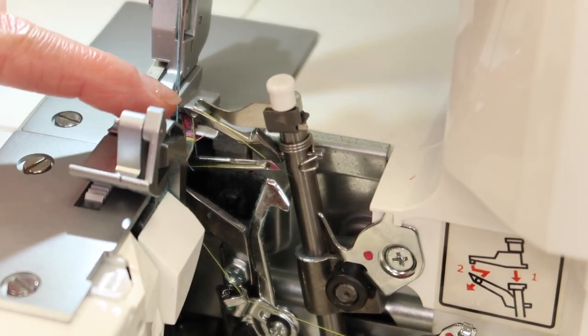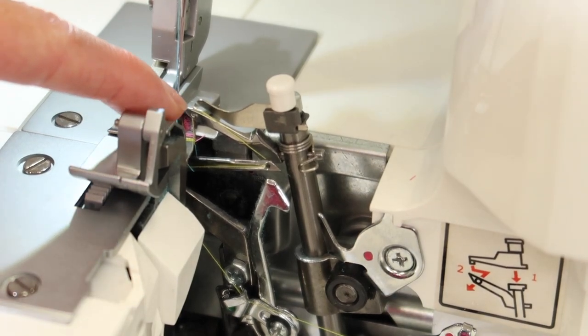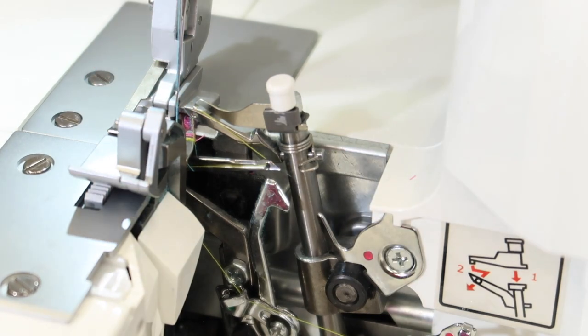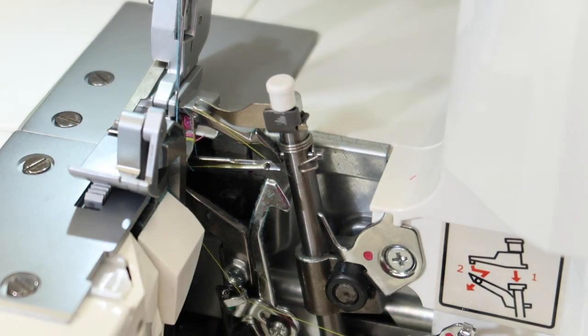You will see that the upper looper is catching the lower looper thread, dragging it with it as it comes all the way to the needle.